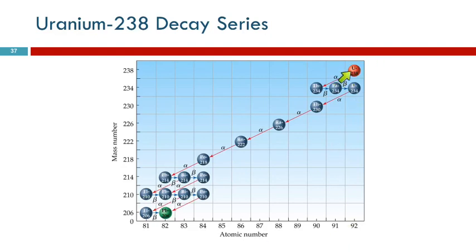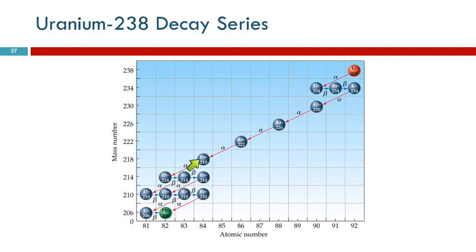So uranium-238 decays to thorium, which decays to protactinium, which decays to uranium-234 — a different one — and then to thorium, and then to radium, and radon, and polonium, and lead, and bismuth, and a different isotope of polonium, and a different isotope of lead, and then a different isotope of bismuth, and a different isotope of polonium.